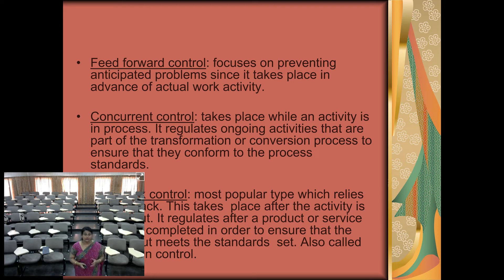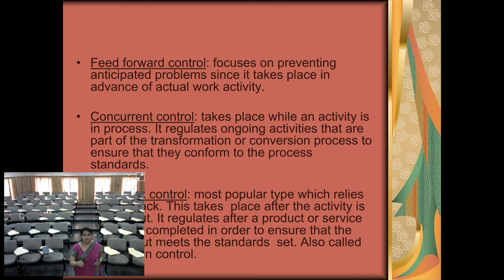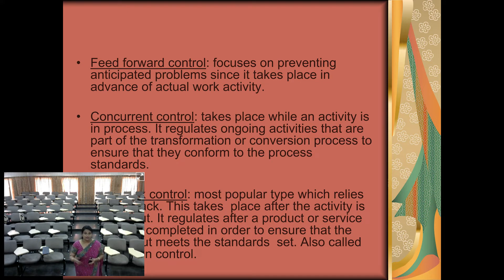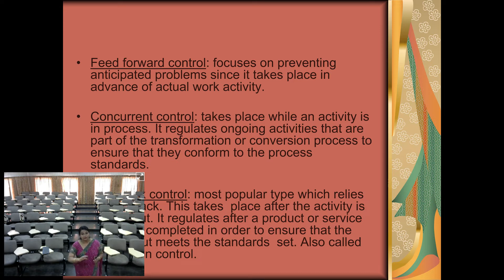The second type of control is concurrent control. Concurrent control takes place while an activity is in process. For example, when I am taking the class itself, if I see that the slides are not coming clearly, I will go and set it right. It regulates ongoing activities that are part of the transformation or conversion process to ensure they conform to the standard. While taking the class, I check whether you can see the slides and hear me properly — setting things right then and there.